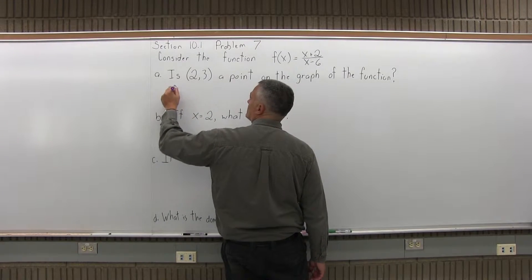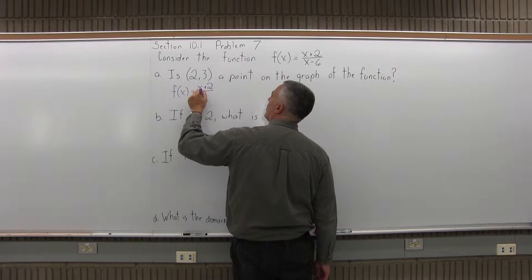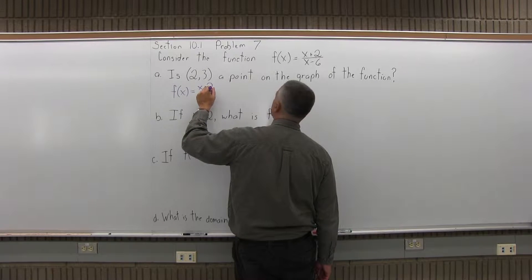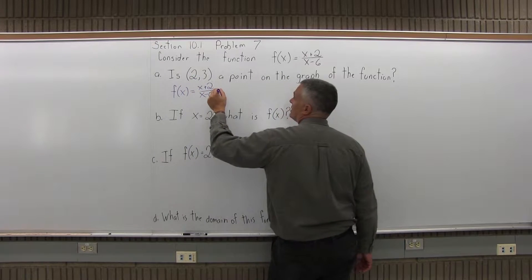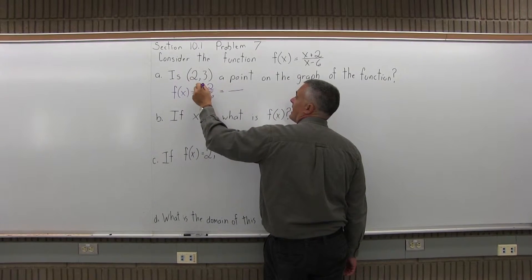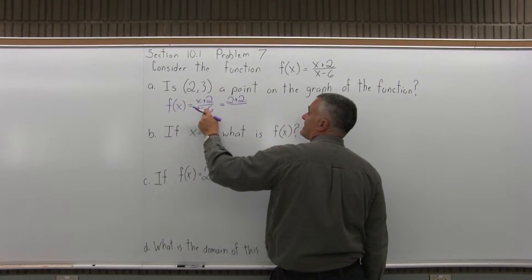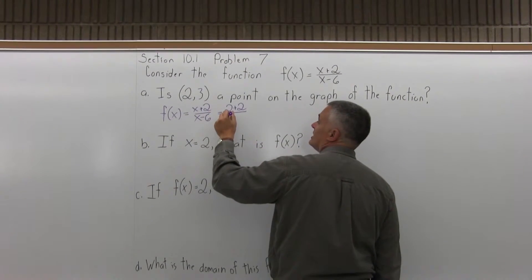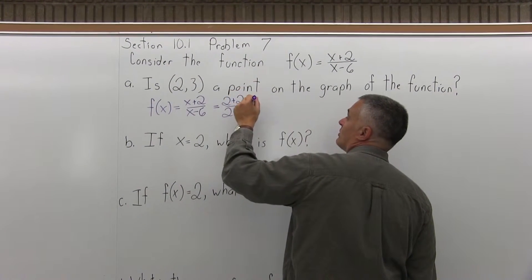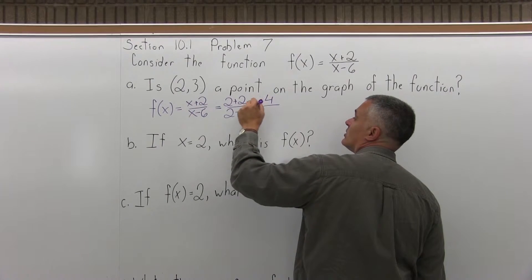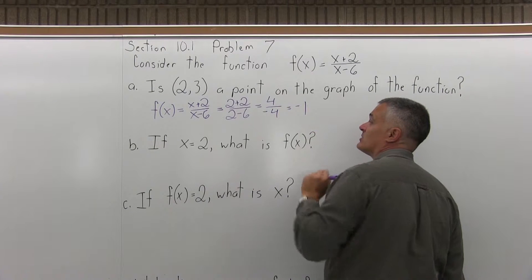Take the function that's given, which is f(x) equals x plus 2 over x minus 6, and put in a value of 2 for x. The x plus 2 on top would become 2 plus 2, the x minus 6 underneath would be 2 minus 6. In the numerator, 2 plus 2 is 4, and the denominator 2 minus 6 is negative 4. I can reduce that to minus 1.